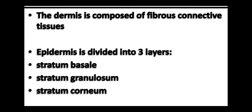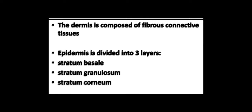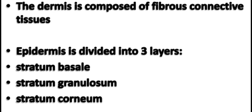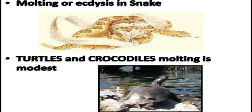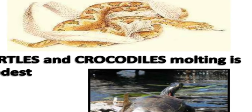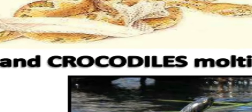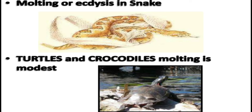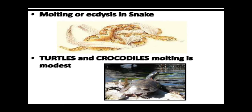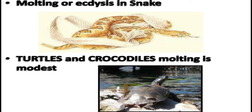The dermis is composed of fibrous connective tissues. The epidermis is divided into three layers: the stratum basale, stratum granulosum, and stratum corneum. Illustrated here is a snake going through ecdysis, and also the turtle and crocodile going through the same process. Ecdysis, or molting, is when periodically the stratum corneum layer of the epidermis is shed in small bits or even in a single piece. In reptiles, the process is called ecdysis or molting. The stratum corneum is a relatively thick layer of the epidermis of reptiles and is shed periodically in this process.